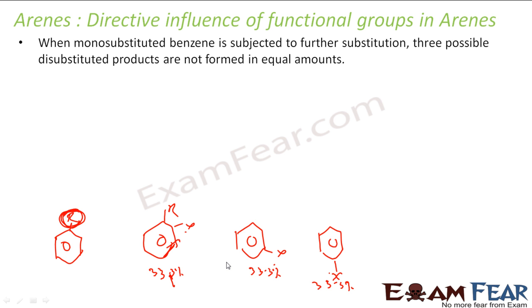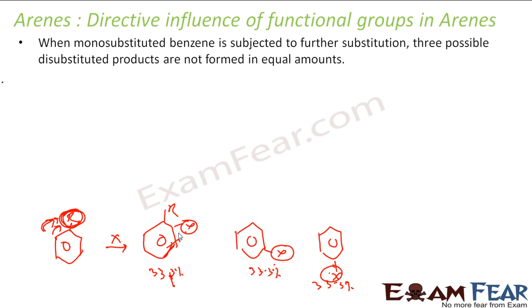And all depends on this group — this is the group which decides whether the majority will be ortho, para, or meta. The functional group already present plays a critical role in directing where my new substitution will take place. Experimentally it is seen that if there is a benzene with a functional group and you do any substitution, the substitution at ortho, para, and meta position is not the same. This depends on the functional group, which controls where the electrophilic substitution will take place.